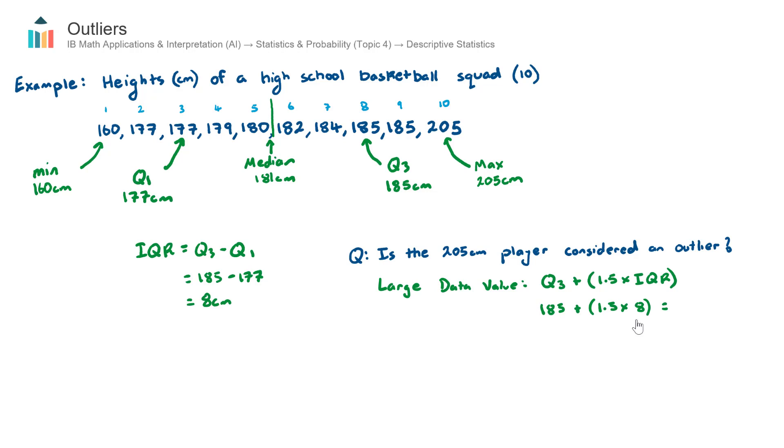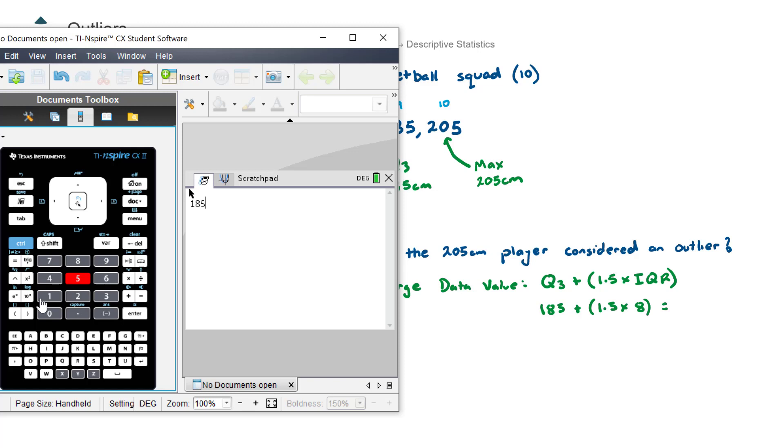Now that is equal to, let's just check this on the calculator. So we have 185 which was my upper quartile plus 1.5 multiplied by my interquartile range. So it's 197.